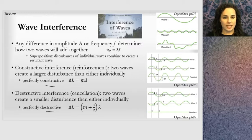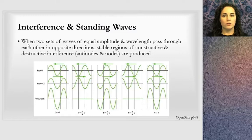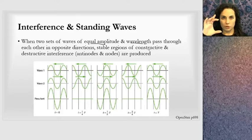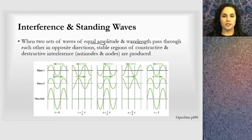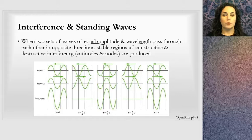When we look at interference of standing waves, we're looking at a very specific situation when two sets of waves of equal amplitude and wavelength — both the same energy, both the same frequency and wavelength — pass through each other in opposite directions. Wave one is moving to the left, wave two is moving to the right. When they pass through each other, they're going to amplify each other in some situations and cancel each other out in others.